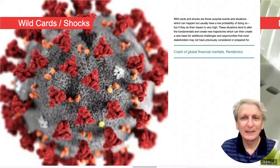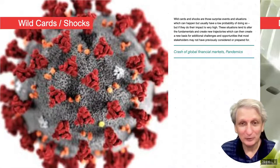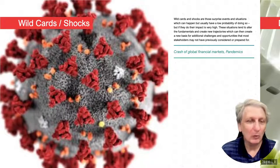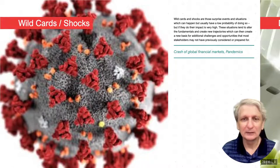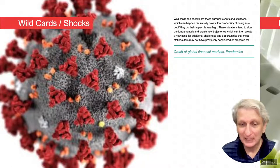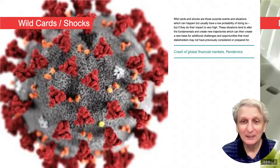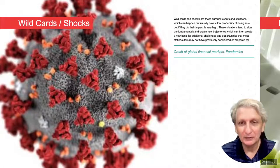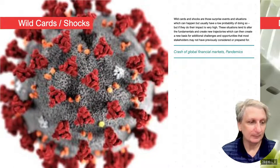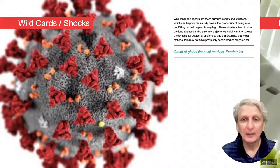While we can have a fair bit of certainty about mega trends, there are also wild cards and shocks to the system that can upset what we expect to happen. Things such as pandemics come along relatively unexpectedly — although those in the know probably felt they were well expected, for the majority of people they were not. There are also shocks in financial markets where we have recessions and depressions, and these are not necessarily always predicted.